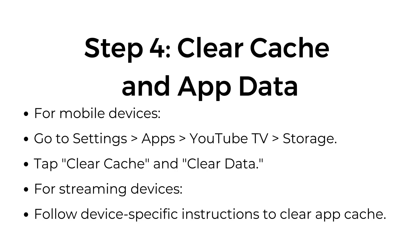Step number four: clear cache and app data. For mobile devices, go to Settings, Apps, YouTube TV, Storage — then tap Clear Cache and Clear Data. For streaming devices, follow device-specific instructions to clear app cache.